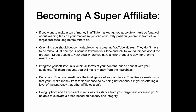Becoming a super affiliate: if you want to make a lot of money in affiliate marketing, you absolutely must be fanatical about keeping tabs on your market so you can effectively position yourself in front of your audience long before others do. One thing you should get comfortable doing is creating YouTube videos — they don't have to be fancy, just point your camera at your face and talk to your audience about the products you are promoting, then direct those people to your blog. Integrate your affiliate links within all forms of content, and be honest with your audience. Tell them you will make money from their purchases — transparency means less resistance and you'll be able to cultivate a brand based on honesty and integrity.